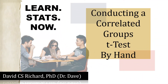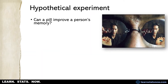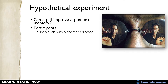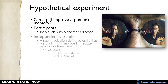In this video we're going to conduct a correlated groups t-test by hand. We'll deal with a hypothetical experiment — if you've seen The Matrix, you remember that Neo had to choose between a red pill and a blue pill. In this hypothetical experiment, we're thinking about a pill that could improve memory, which would be really important for individuals with Alzheimer's disease. Some medications appear to help a little with staving off declines in short-term memory. Our independent variable is essentially a new medication delivered orally that we think might improve immediate recall.